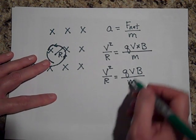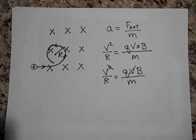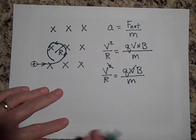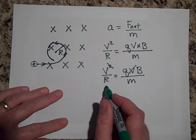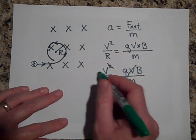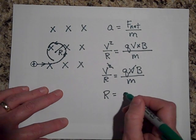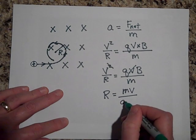We got a V on both sides. So let's get rid of that. And so now it just depends on what we want to solve for. If we want to know the radius of the circle it's going to be in, maybe I'll bring the R here and all this stuff over there. So R is equal to m V over Q B.